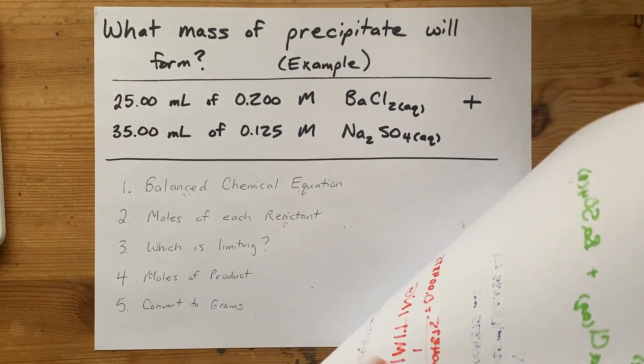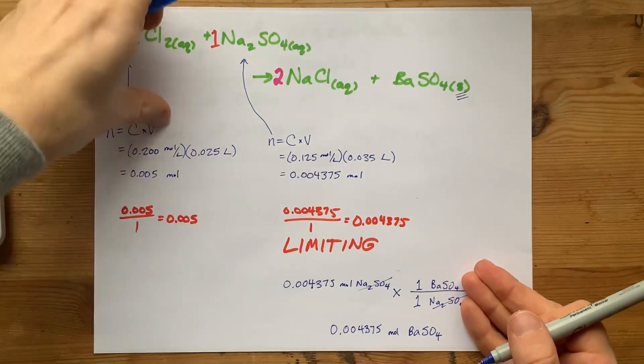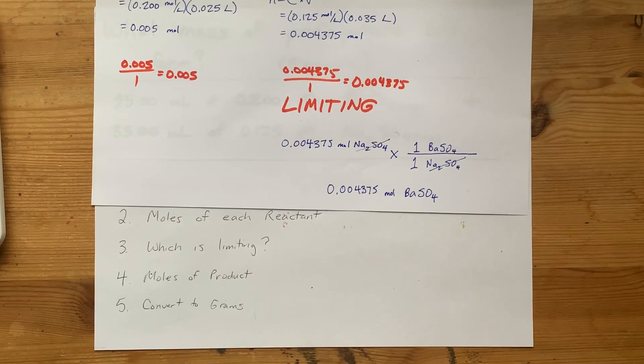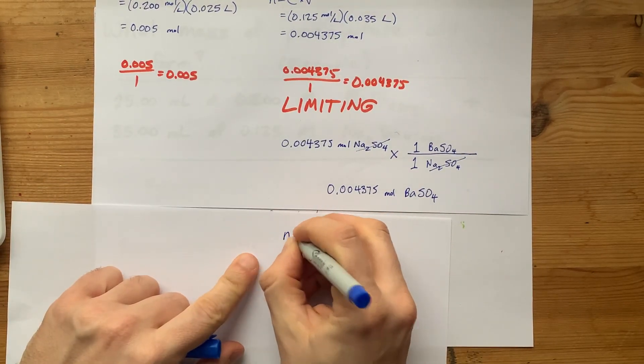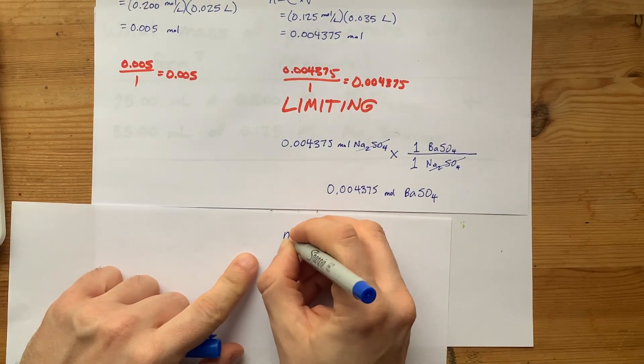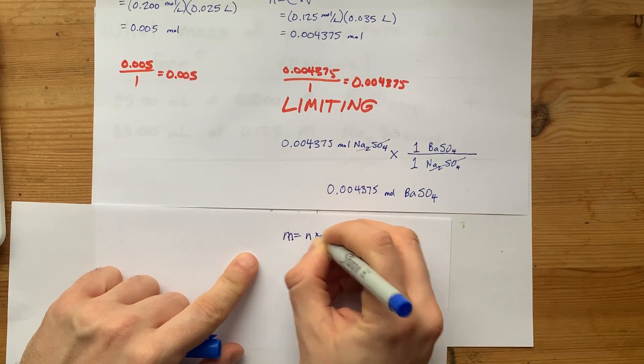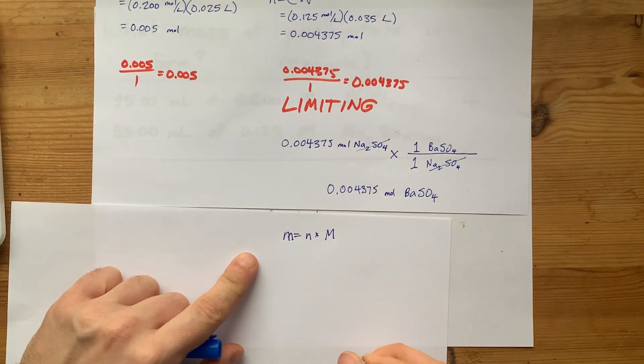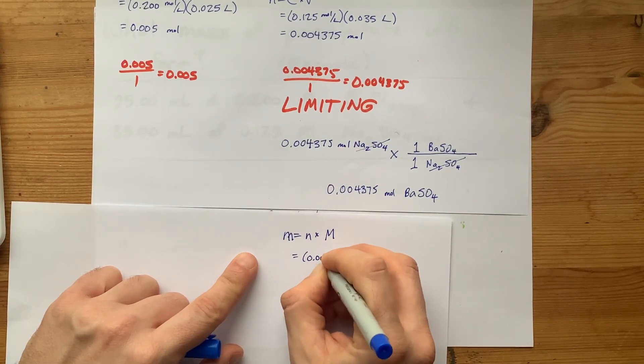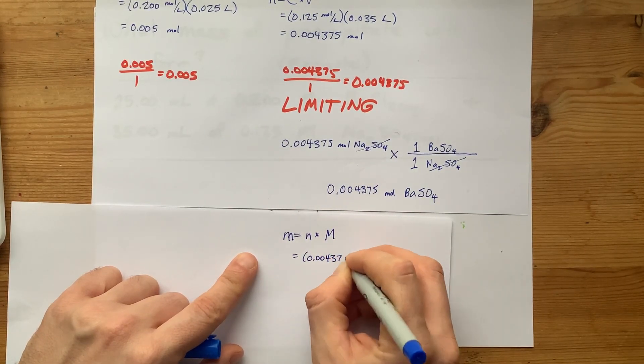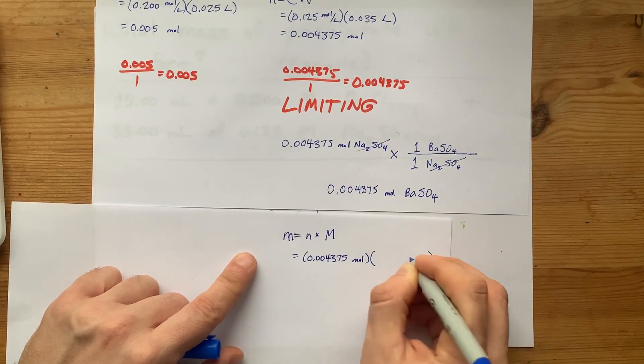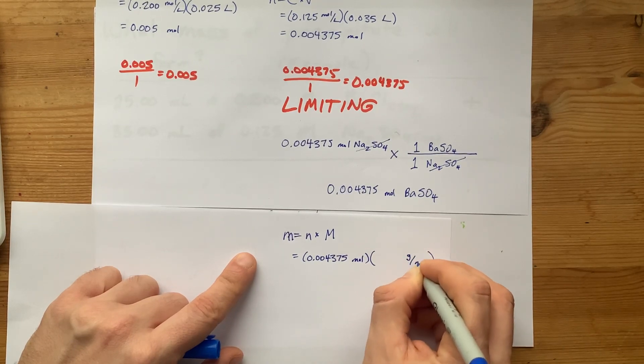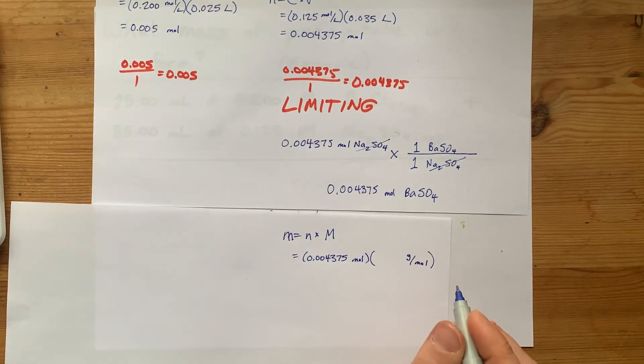But we were asked for mass of precipitate, so we've got to convert it to grams. I'm going to need an extra piece of paper for that. How do you convert moles to grams? Well, the answer is that mass equals moles times molar mass. We are being given, or rather, we have done a lot of work to calculate that we have this many moles of BaSO4, but we don't yet have the molar mass measured in grams per mole. That's what the periodic table is for.